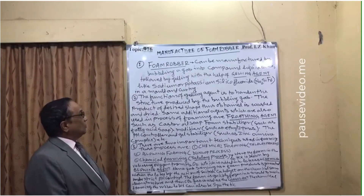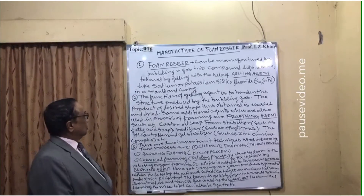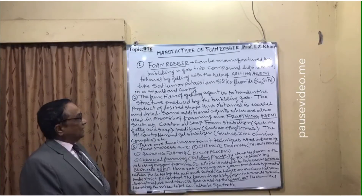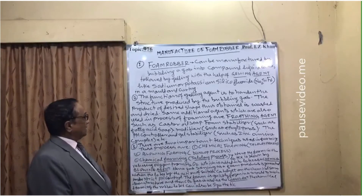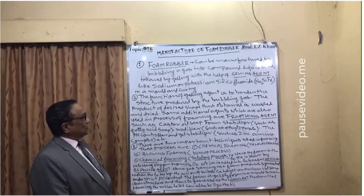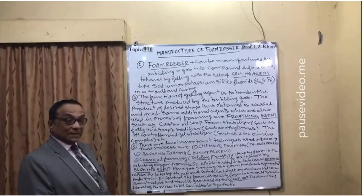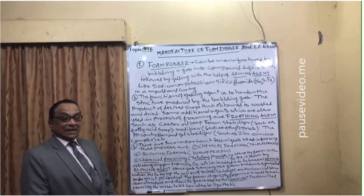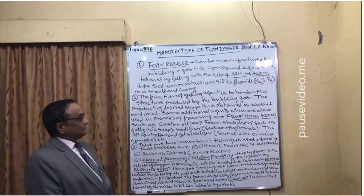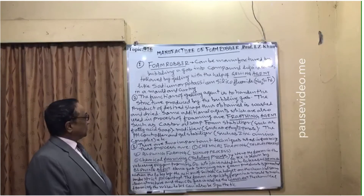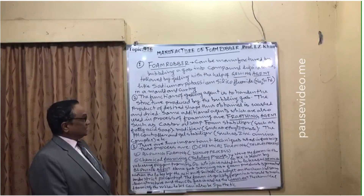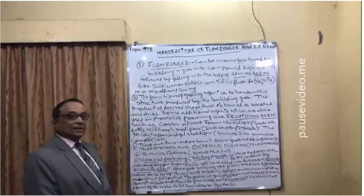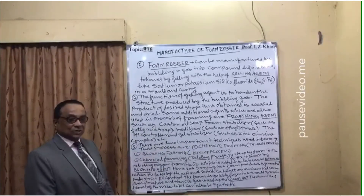The Na2SiF6 is used in a mold for curing. The function of the gelling agent is to harden the structure produced by the bubbling gas — that is its main role — to make it hard so that it can give some shape and structure. The product of desired shape is then washed and dried.